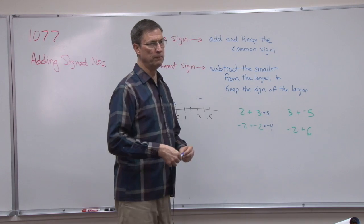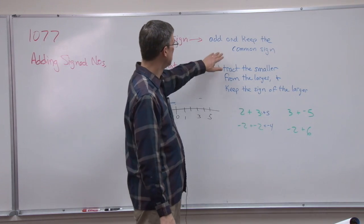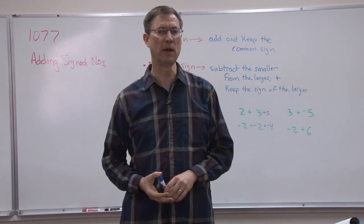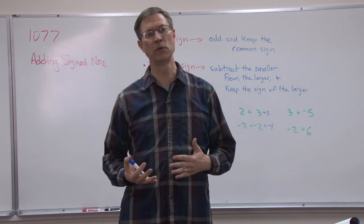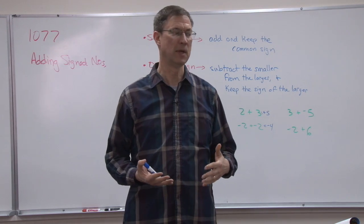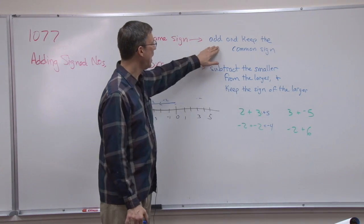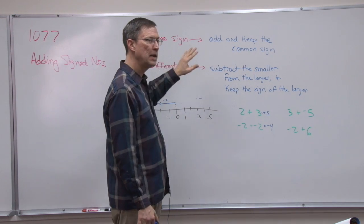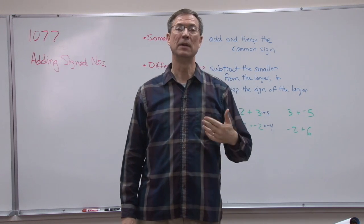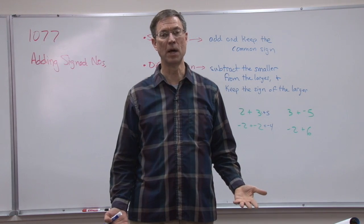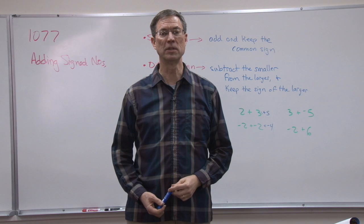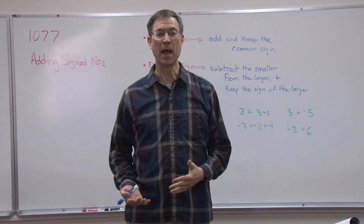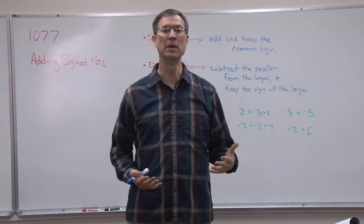Here's a rule, and I have my students memorize this. The PACE explains using terms like absolute value — add the absolute values of the signed numbers and then keep the sign. I just say: add and keep the common sign. For adding when the signs are the same, add and keep the common sign. Say it with me: adding when the signs are the same, add and keep the common sign.